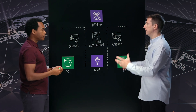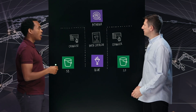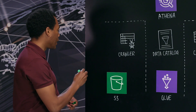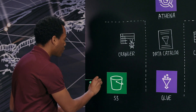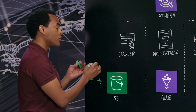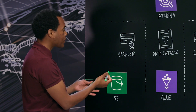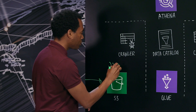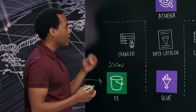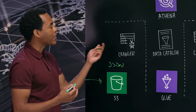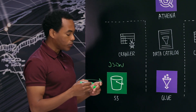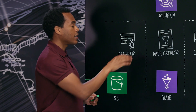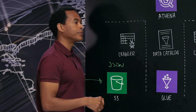So how does it all begin? From our data pipeline, we have JSON records written right into S3, and that data then gets cataloged by the Glue crawler, and that information gets stored in the data catalog.